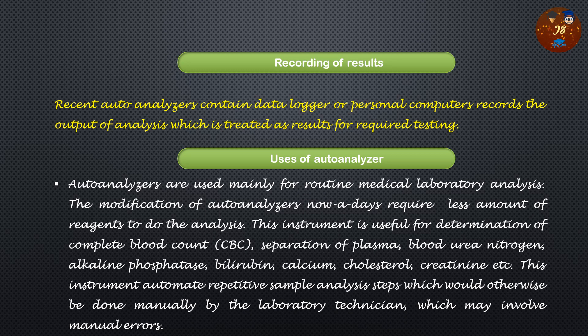Auto analyzers are used mainly for routine medical laboratory analysis. Modern modifications require less reagent, making it a cost-effective instrument. It is useful for determination of complete blood count (CBC), and separation or measurement of plasma, blood urea nitrogen, alkaline phosphatase, bilirubin, calcium, cholesterol, creatinine, and more. It automates repetitive sample analysis steps that would otherwise be done manually, minimizing errors — one lab technician can operate the full machine by simply switching it on and placing samples.